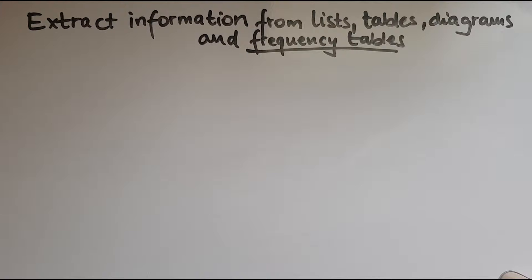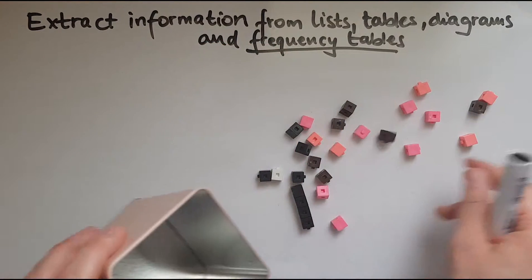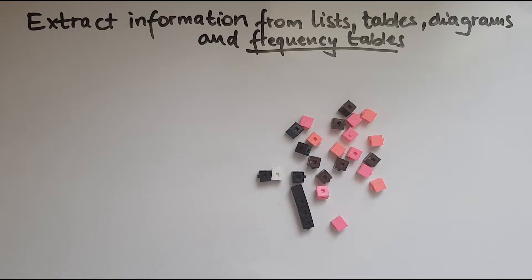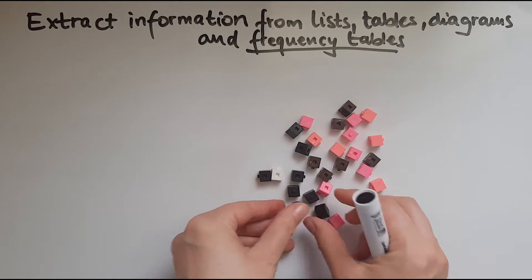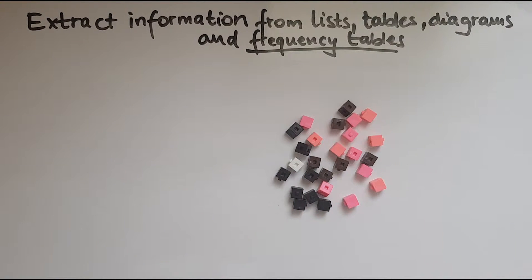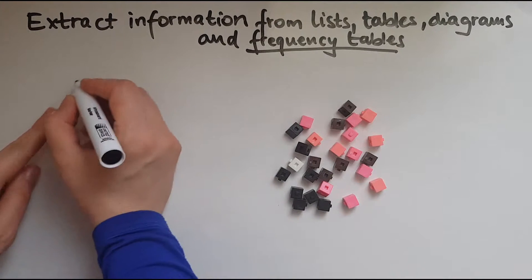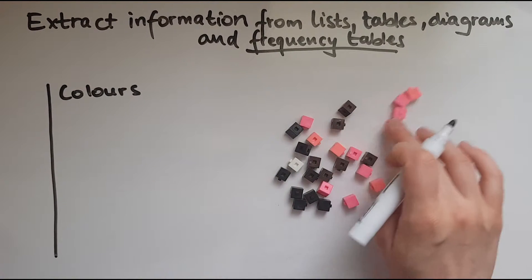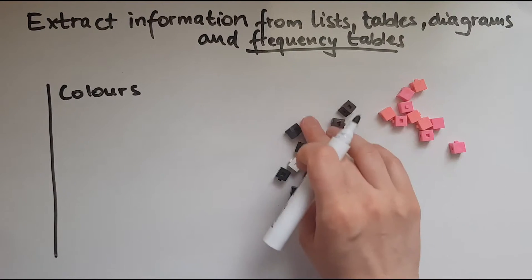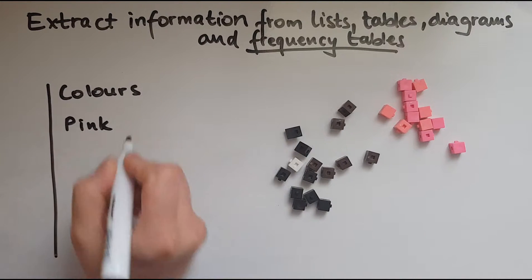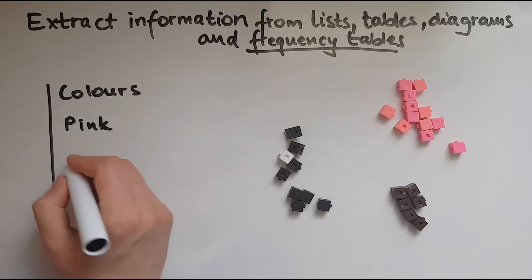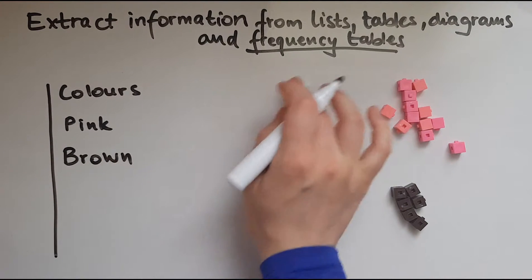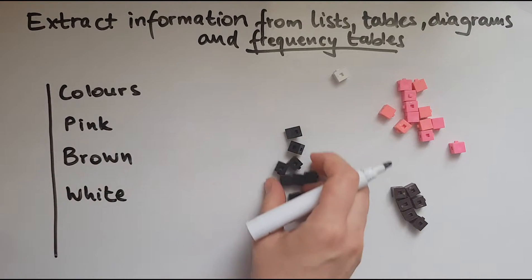Now frequency tables are things that you probably have come across before and they look very similar to tally charts and I'll show how. So I have a number of cubes in my tin. What I want to do is show the colours, the different colours, and how many of each colour there are in a frequency table. So I'll start with colours. We've got pink ones, so I'll write pink, we've got brown, we've got white, and we've got black.